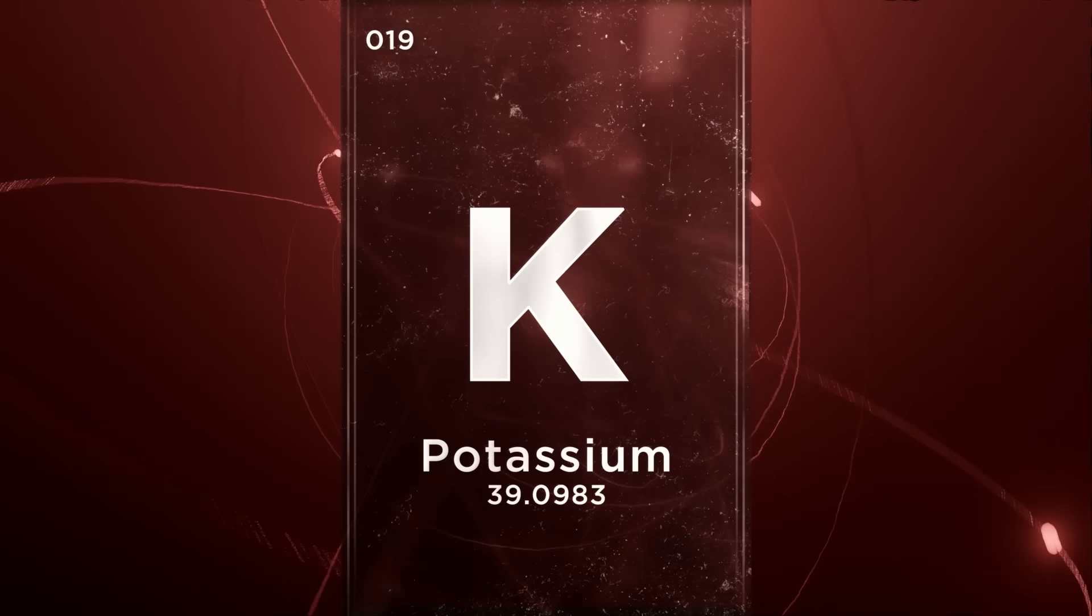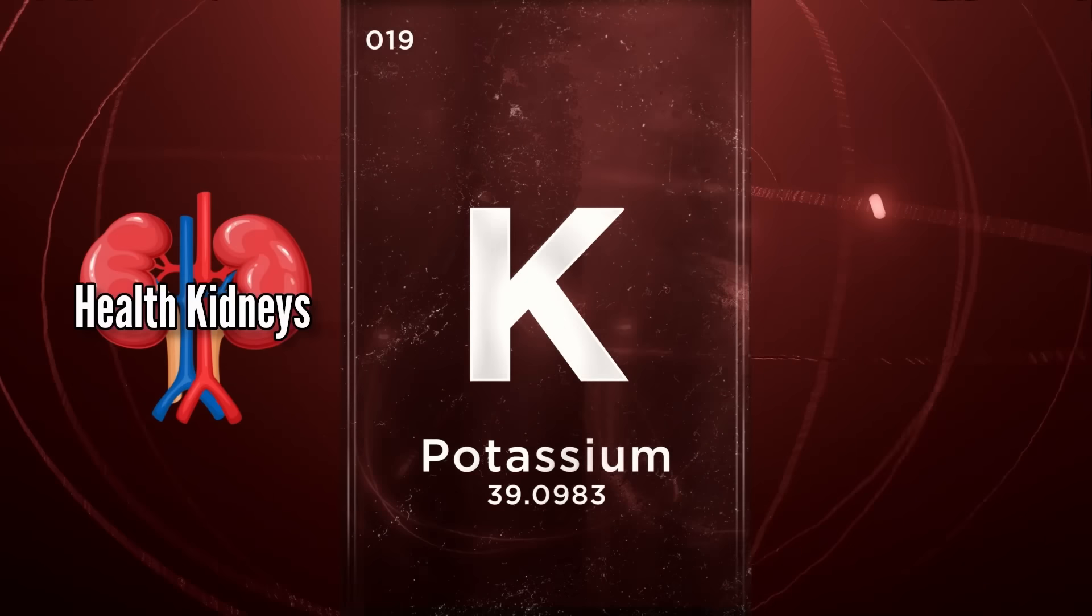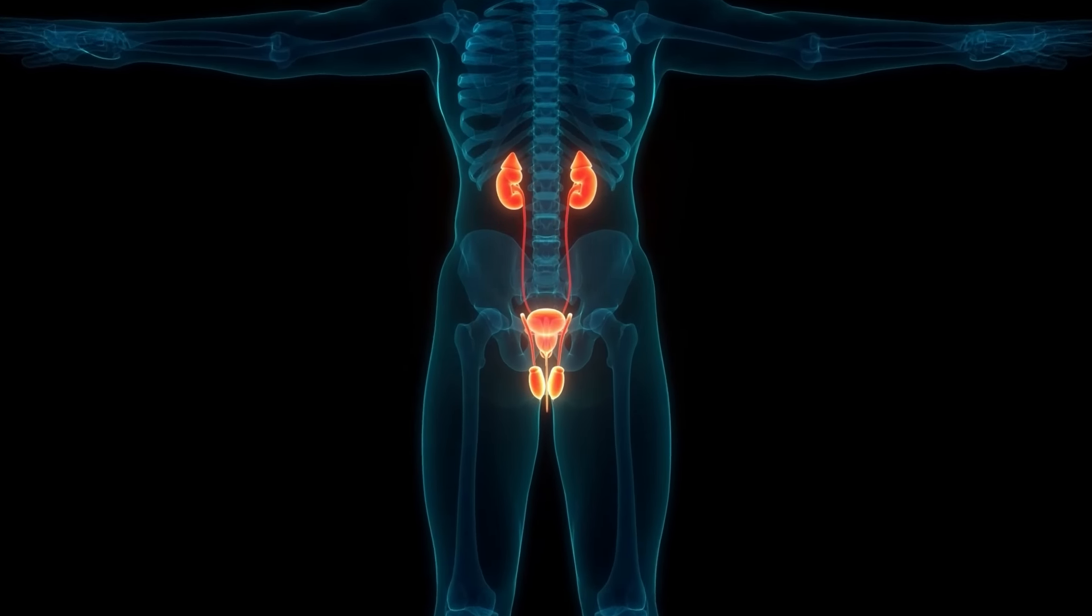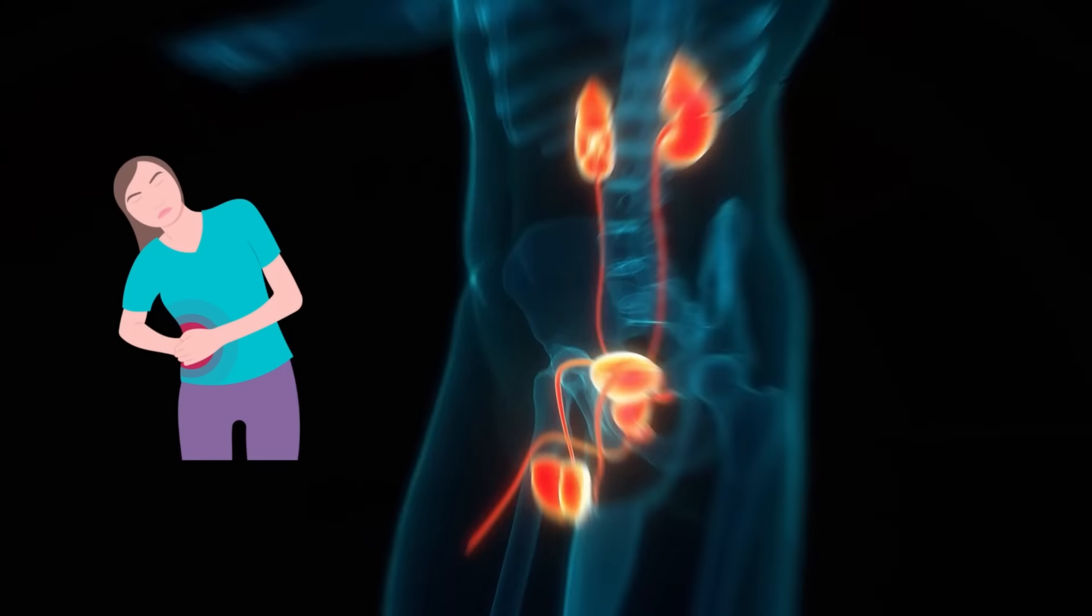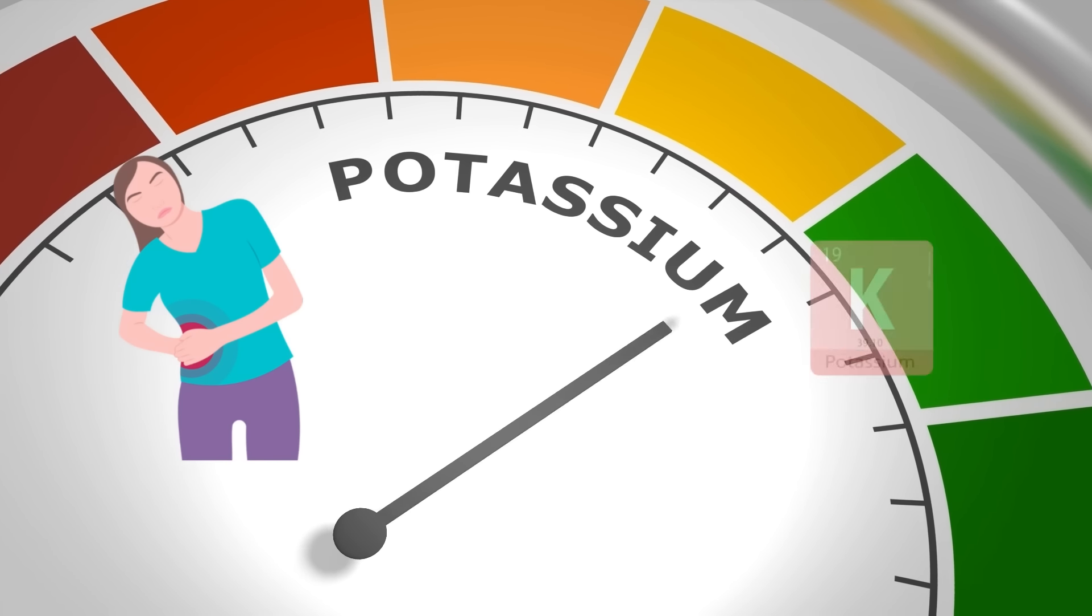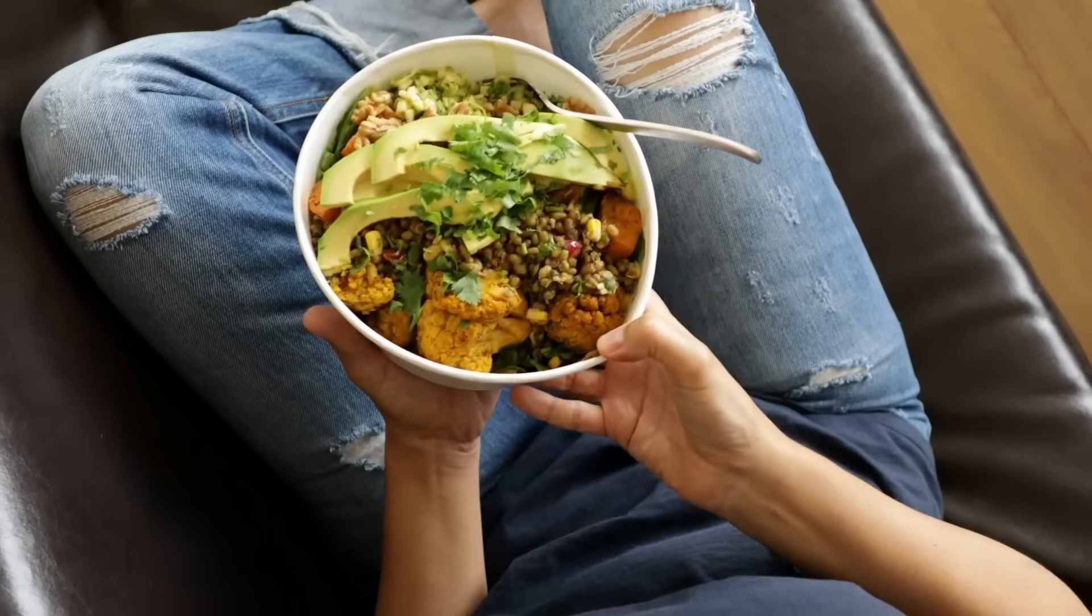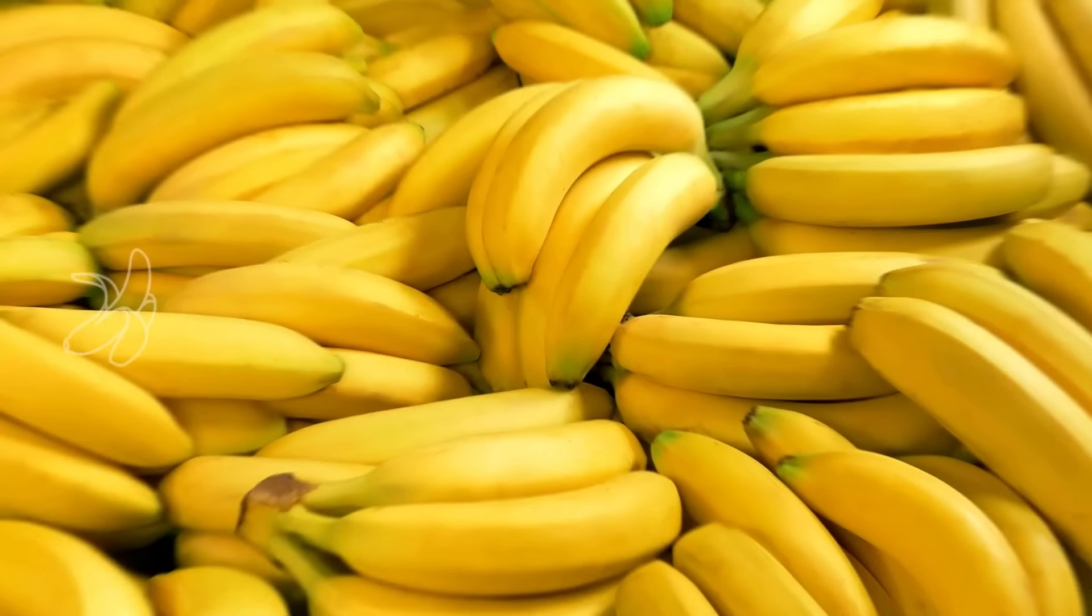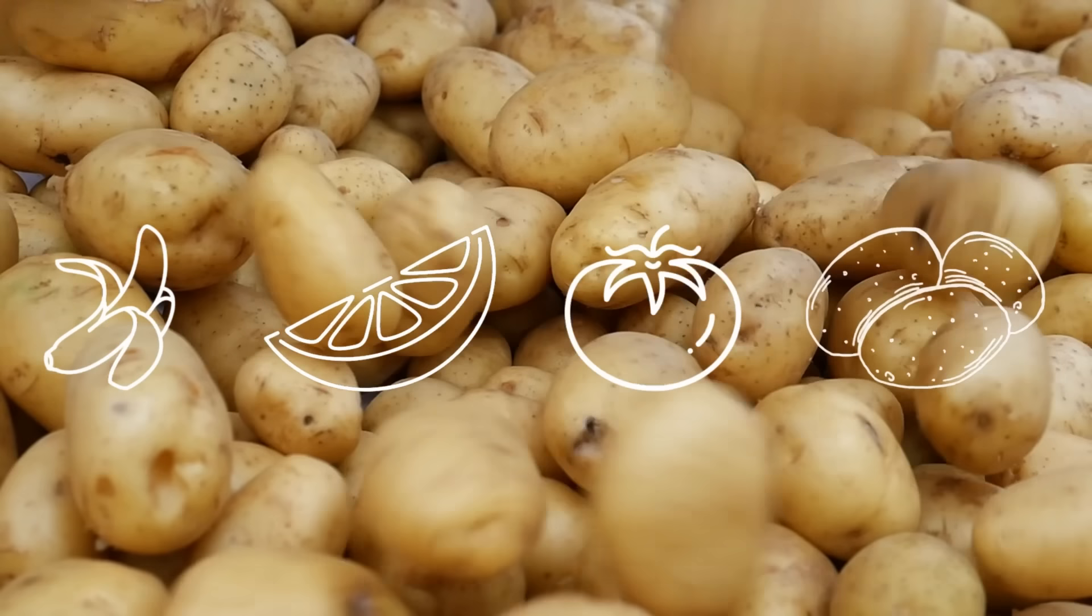Experts say that potassium can be actually good for people with healthy kidneys, and even many of them with early stage kidney disease. However, if you have advanced stage kidney disease, your kidneys may be having trouble regulating potassium levels. In that case, you must limit your intake of high potassium foods, such as bananas, oranges, tomatoes, and potatoes.